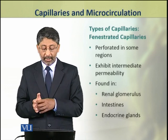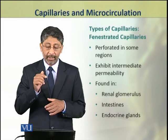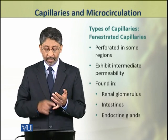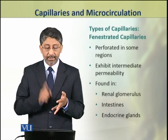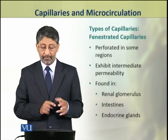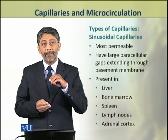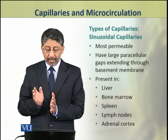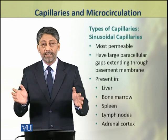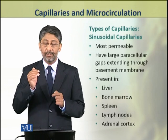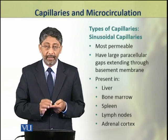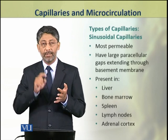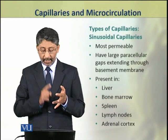Fenestrated capillaries are perforated in some regions, so they exhibit intermediate permeability. They are found in the renal glomerulus, intestines, and endocrine glands. Sinusoidal capillaries are the most permeable. Their basement membrane has large paracellular gaps. This type of capillary is found in the liver, bone marrow, spleen, lymph nodes, and adrenal cortex.